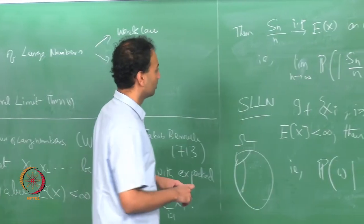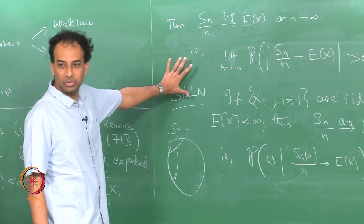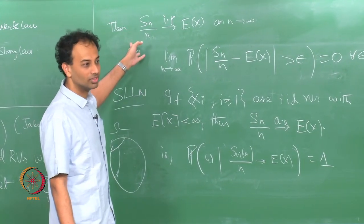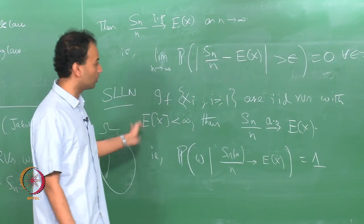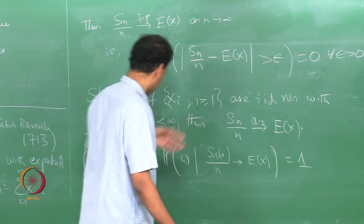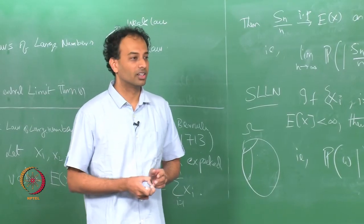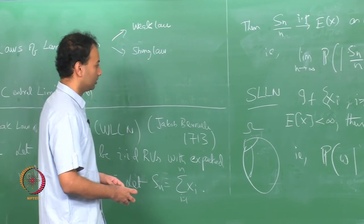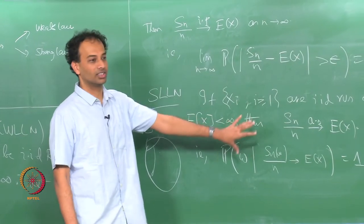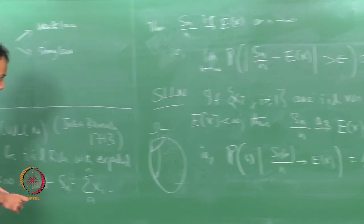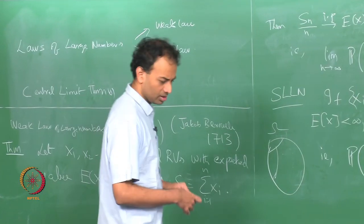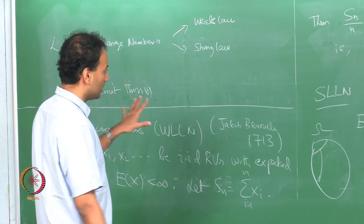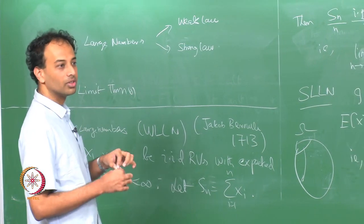The strong law implies the weak law, so the weak law is completely subsumed. Proving the weak law is much easier — done 300 years ago — while the strong law is much harder, a measure-theoretic statement proved 100 years ago. Next class we will prove these results, and then there will be one class for the central limit theorem.